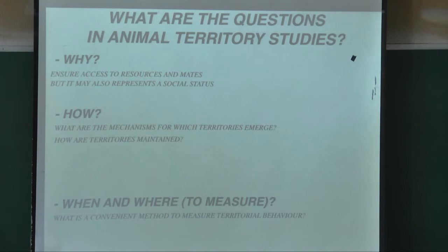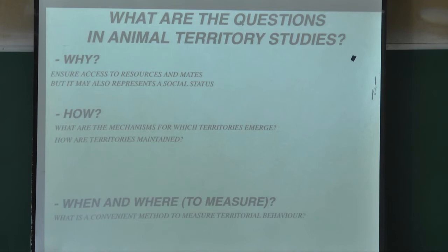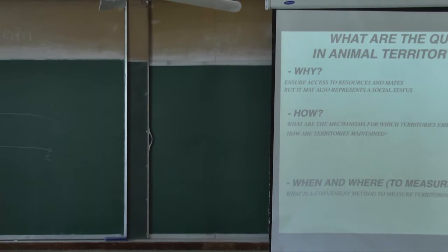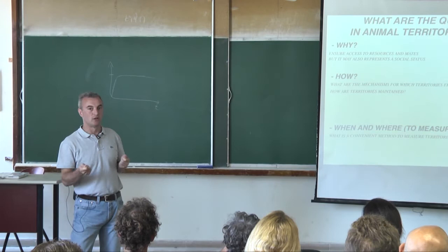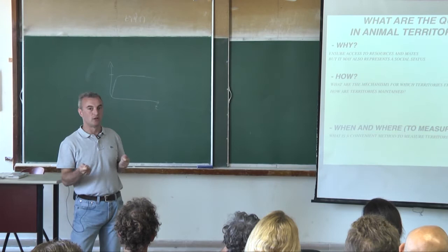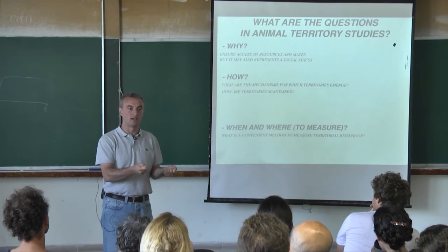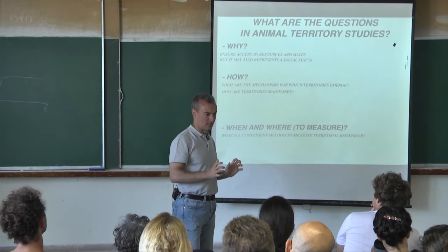Do you know the difference between a home range and a territory? A territory is something you actually defend — you ensure nobody gets in, so it's an exclusive core area. Then you have a home range, which is still a confined space where you venture into but may share with others. The 'when and where' is a classical question: when you measure, you have to deal with the size of the territory or home range and the complications of measurement with a ruler while the animal is moving.